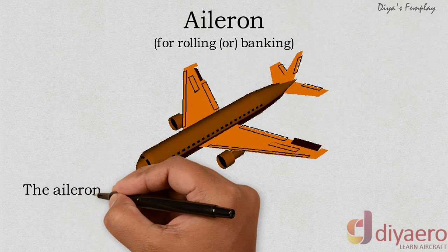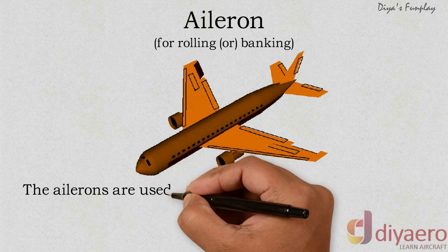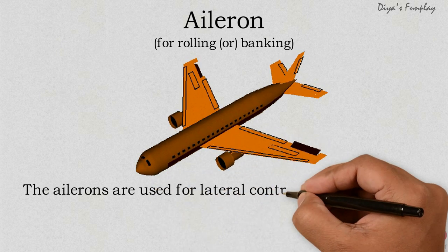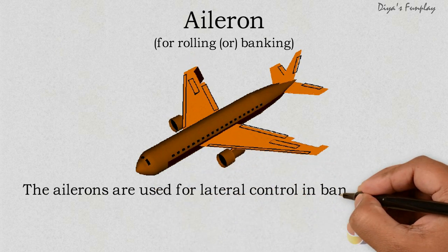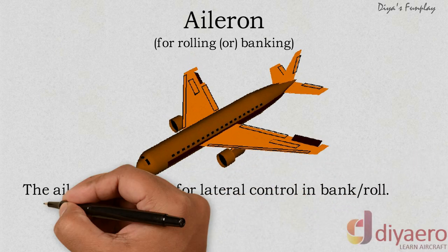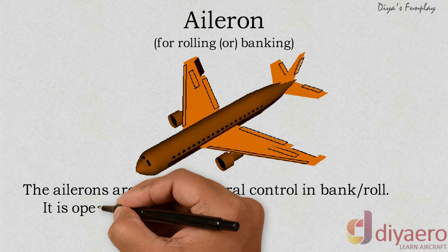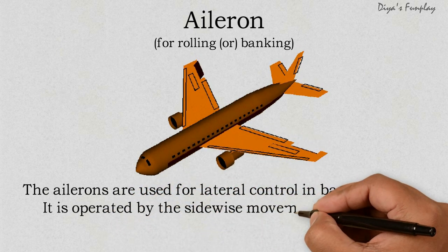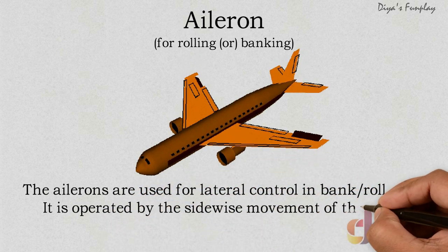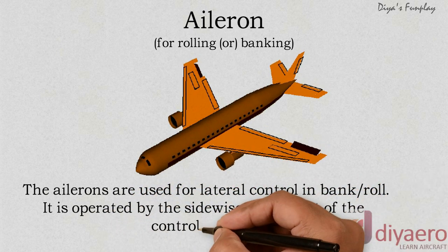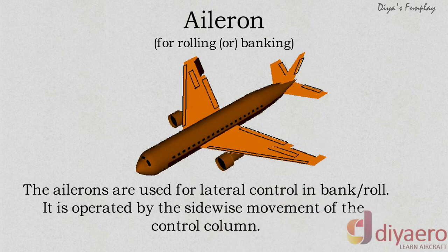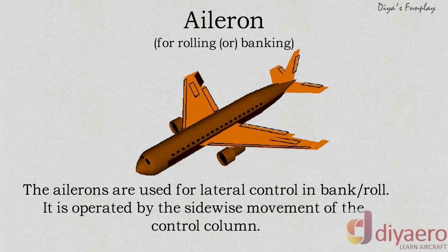The ailerons on the left wing and the right wing move simultaneously in opposite directions. When the aileron on the left wing goes up, the aileron on the right wing goes down, thereby increasing the lift in one wing and decreasing the lift in the other wing.